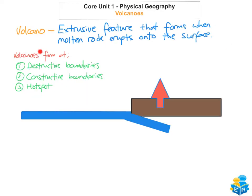We're going to look at the first one, which is destructive plate boundaries. A good example you can use is the volcano at Mount Pinatubo in the Philippines. What you have is an oceanic and a continental plate — Mount Pinatubo is located in the Philippines where these two plates meet. The oceanic plate is the Philippine plate and the continental plate is the Eurasian plate. The Philippine plate is the heavier plate and it has been subducted beneath the Eurasian plate.